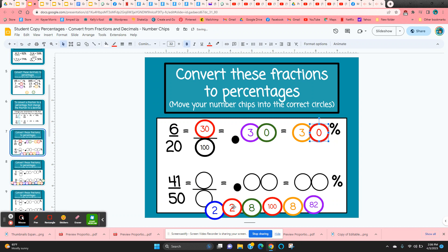Same thing with the next one. We need 100 in the denominator. So that means we're going to multiply it by two. And if we multiply 41 times two, we get 82 hundredths.